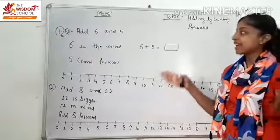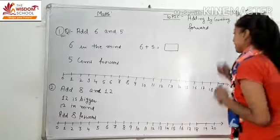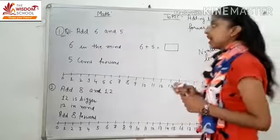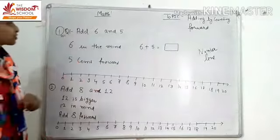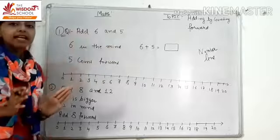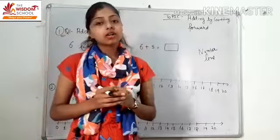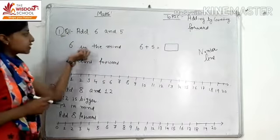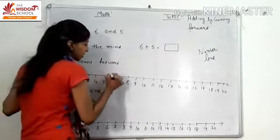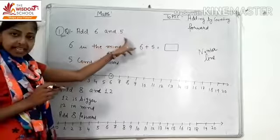We are going to use a number line. For the first problem, keep six in the mind. What are we going to do? Add five.